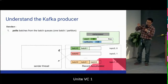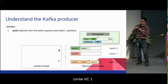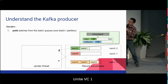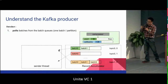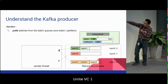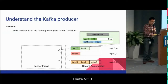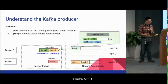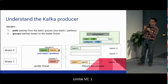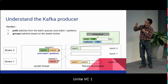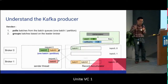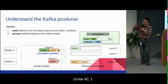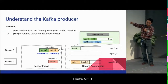There's another sender thread — an internal thread of the producer — that pulls batches from the batch queue, pulling at most one batch from each batch queue. It groups batches based on the leader broker. For example, batch zero from topic zero partition zero and batch zero from topic one partition zero both have their leader on the same broker, so the sender thread groups them in the same request. There's another request sent to broker one as well. The sender thread then sends each request to the corresponding broker and gets a response back.